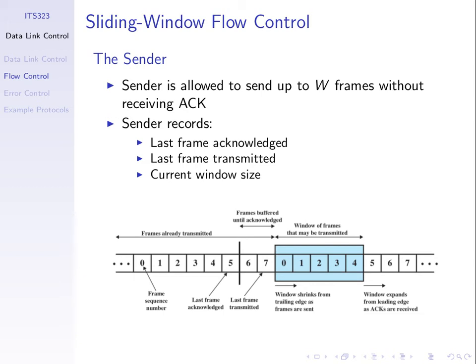As I transmit frames, if I transmit frame zero, zero becomes part of the set of transmitted frames — six, seven, and zero — and the blue box gets smaller on the left-hand side. I'm allowed to send another four, so this space is always seven frames. The blue rectangle is our window — that's where the name comes from. As we transmit frames, the window closes on the left. As we receive ACKs, the window opens on the right. Over time, you can imagine that window sliding along.